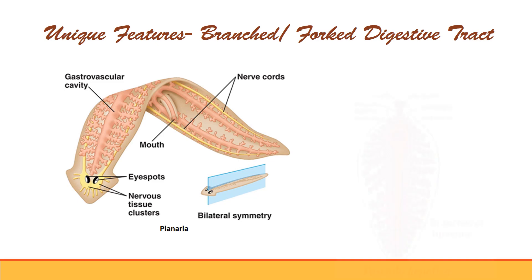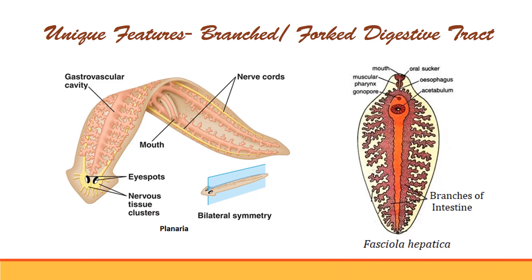Here we have also shown the diagram of Fasciola hepatica. It too has a branched intestine. This is the branched intestine of Fasciola hepatica. Its sub-branches are distributed throughout the whole body so that digested matter could be absorbed locally into its tissues. In this way we have seen the branched digestive tract in these organisms.